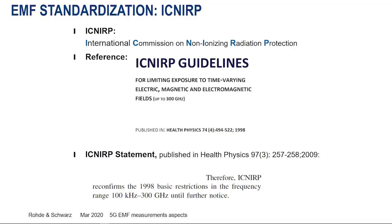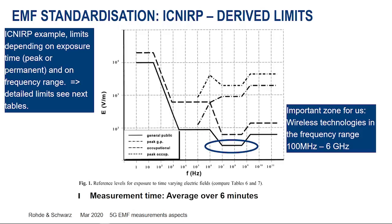I'd like to touch on the ICNIRP, which is the International Commission on Non-Ionizing Radiation Protection. They write a lot of standards and documents and propose procedures on how to perform measurements on EMF, and also what the limits and limiting factors are. For example, we see one graph issued by the ICNIRP which sets certain thresholds for EMF exposure.